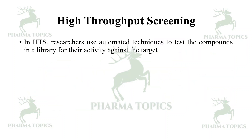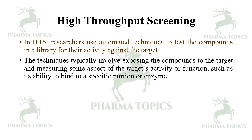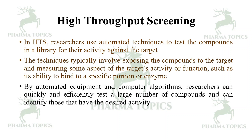In HTS, researchers use automated techniques to test compounds in a library for their activity against the target. The techniques typically involve exposing compounds to the target and measuring some aspect of the target's activity or function, such as its ability to bind to a specific receptor or enzyme. By using automated equipment and computer algorithms, researchers can quickly and efficiently test a large number of compounds and identify those that have the desired activity.